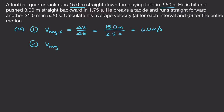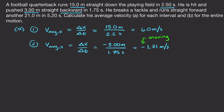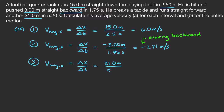For the second interval, same formula — delta x over delta t. He goes three meters but backward, so that's the negative x direction, giving negative 1.71 meters per second. That minus sign just tells us he's moving in the minus x direction. For the last interval, delta x over delta t: he's going forward 21 meters in 5.20 seconds, giving 4.04 meters per second.